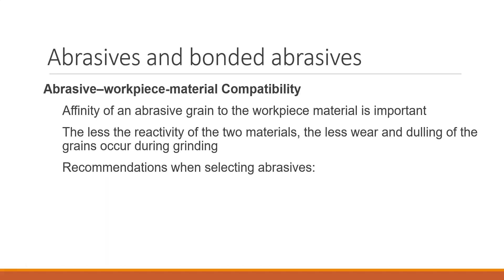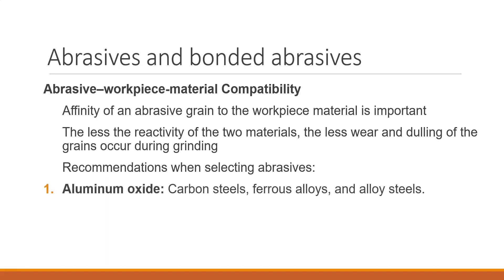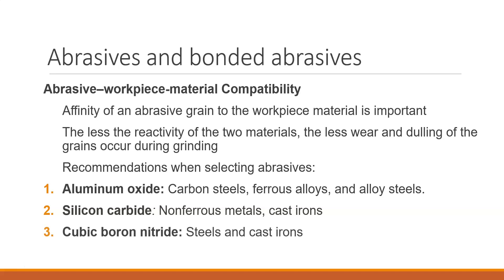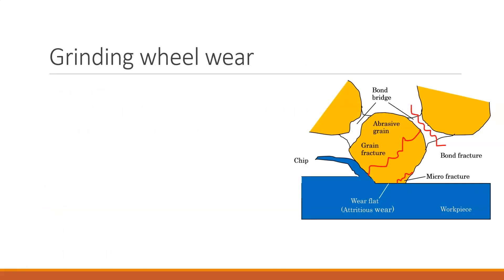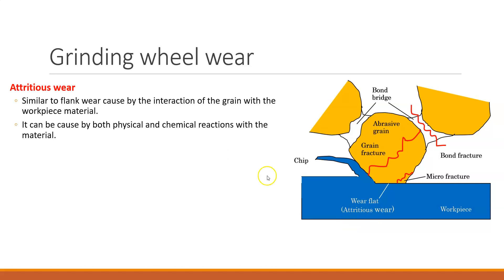Aluminum oxide works with carbon steels and alloy steels; silicon carbide works with non-ferrous metals; CBN works with steels and cast iron; and diamond works with ceramics and carbides. When considering how a wheel wears, there are three types. Grain fracture exposes new cutting edges via friability. Bond fracture occurs when the bond breaks and the entire grain is lost. Attritious wear is when the grain wears flat without fracturing.